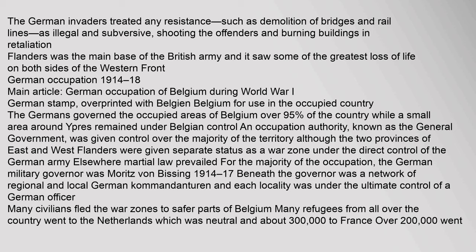The Germans governed the occupied areas of Belgium — over 95% of the country — while a small area around Ypres remained under Belgian control. The occupation authority, known as the General Government, was given control over the majority of the territory, although the two provinces of East and West Flanders were given separate status as a war zone under the direct control of the German army. Elsewhere martial law prevailed for the majority of the occupation. The German military governor was Moritz von Bissing from 1914 to 1917. Beneath the governor was a network of regional and local German commandanturen, and each locality was under the ultimate control of a German officer.